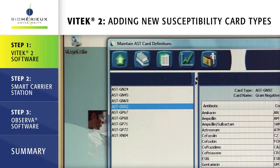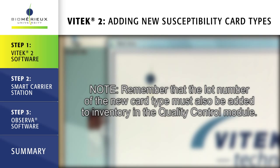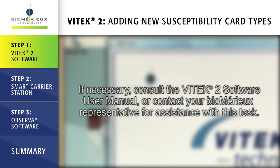Click the save icon. Click the return to main menu icon. Note: remember that the lot number of the new card type must also be added to inventory in the quality control module. If necessary, consult the Vitek 2 software user manual or contact your bioMérieux representative for assistance with this task.